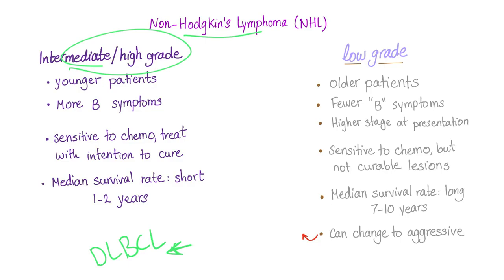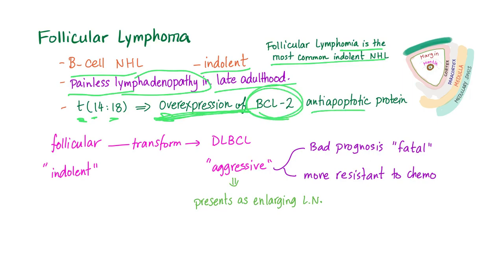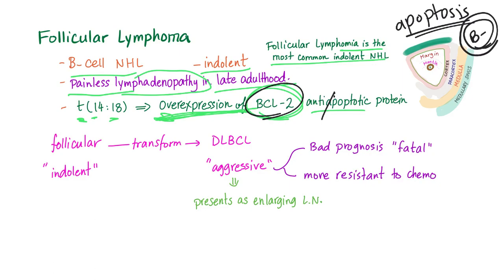Follicular lymphoma is an indolent B-cell non-Hodgkin's lymphoma — in fact, the most common indolent non-Hodgkin's — presenting with painless lymphadenopathy in late adulthood. Translocation between chromosomes 14 and 18 leads to overexpression of BCL2, an anti-apoptotic protein that cancels apoptosis. During somatic hypermutation, we'd normally get rid of these B-cells, but with BCL2 overexpression, they cannot undergo apoptosis — so they grow and replicate, forming cancer.